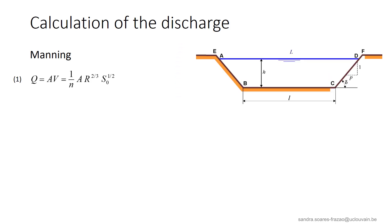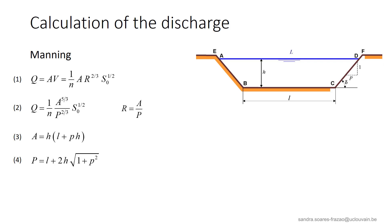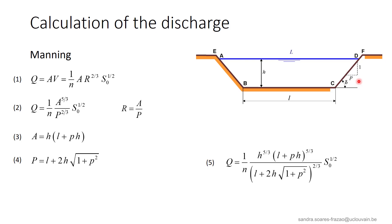We will develop this calculation for a trapezoidal cross section. Using the definition of the hydraulic radius, the expression can be rewritten. For the trapezoidal cross section, A and P can be expressed as functions of the water depth H, the width at the bottom level L, and the bank slope defined by small p. Finally, the discharge can be expressed directly as a function of these parameters by incorporating equations 3 and 4 into equation 2.